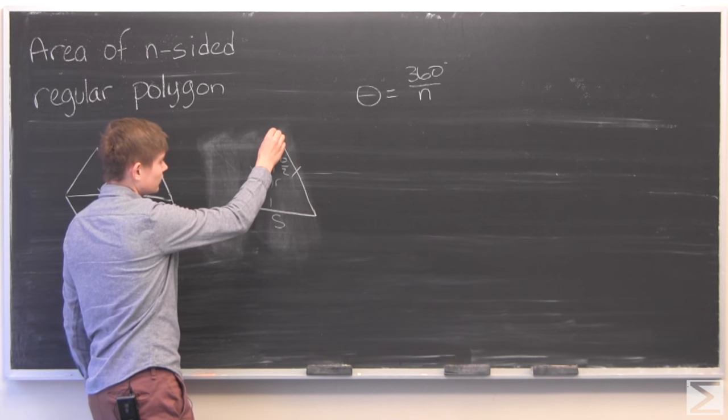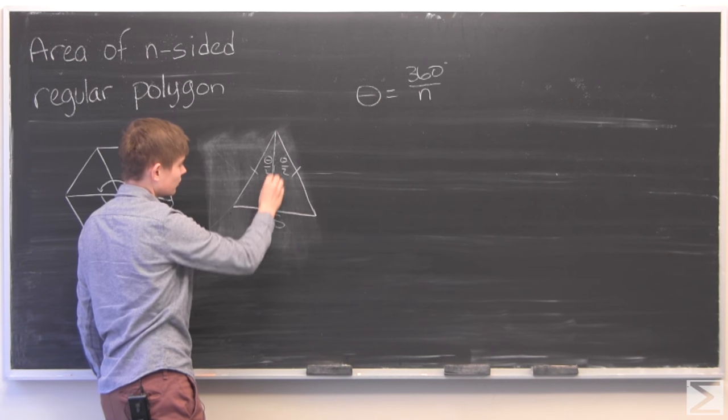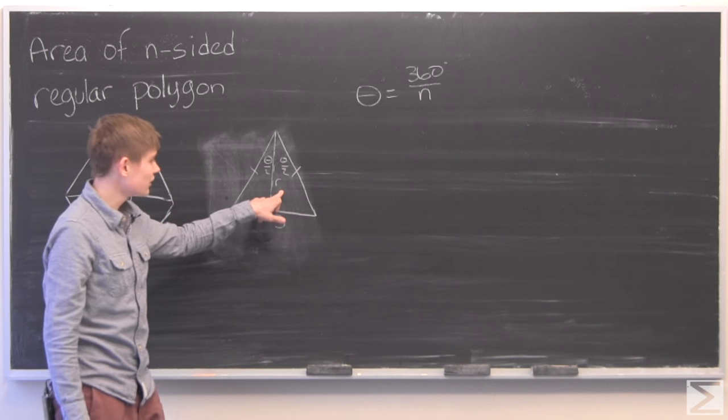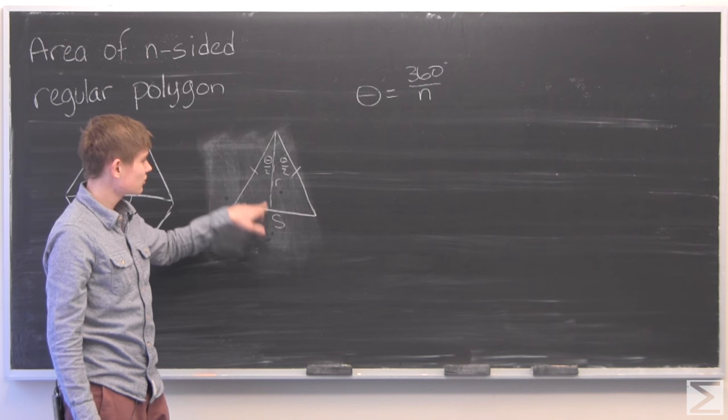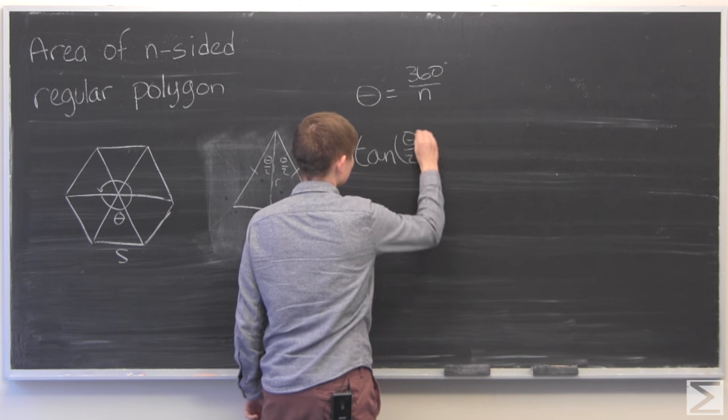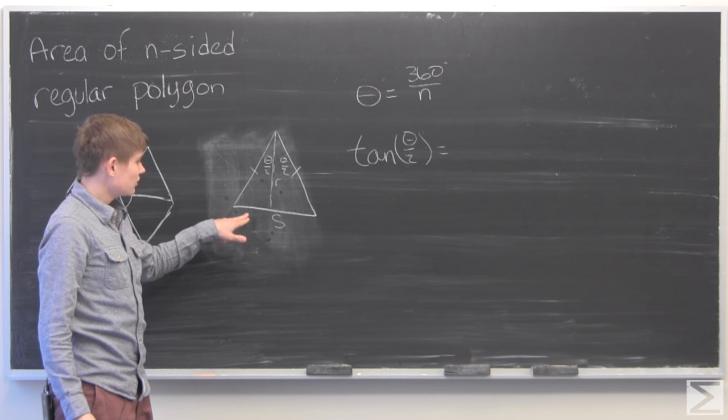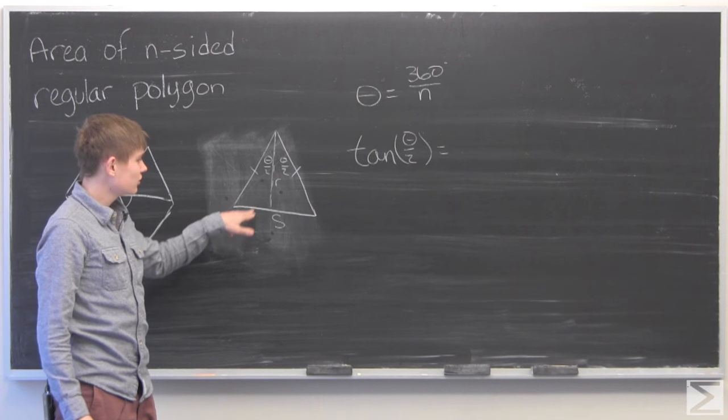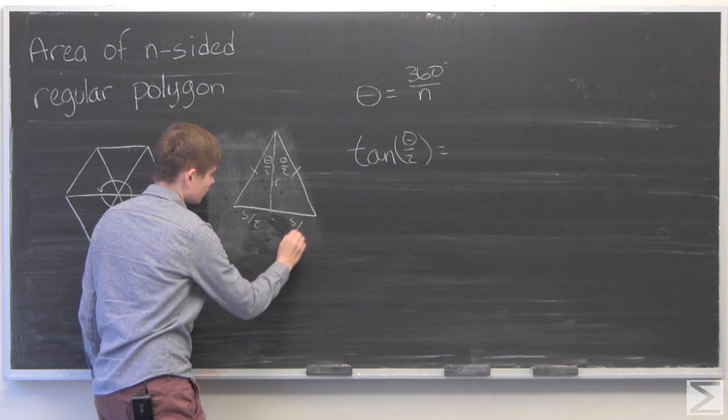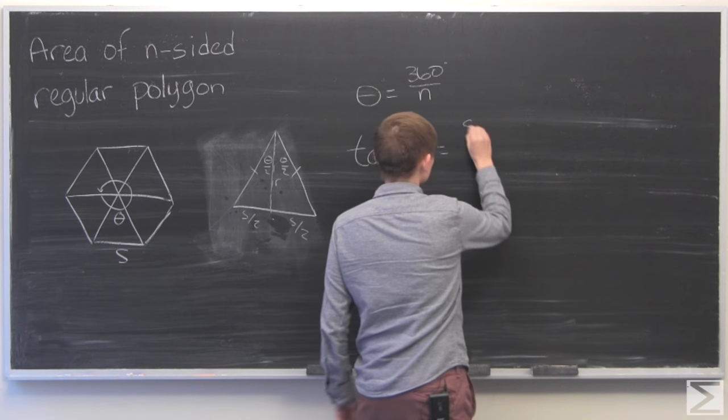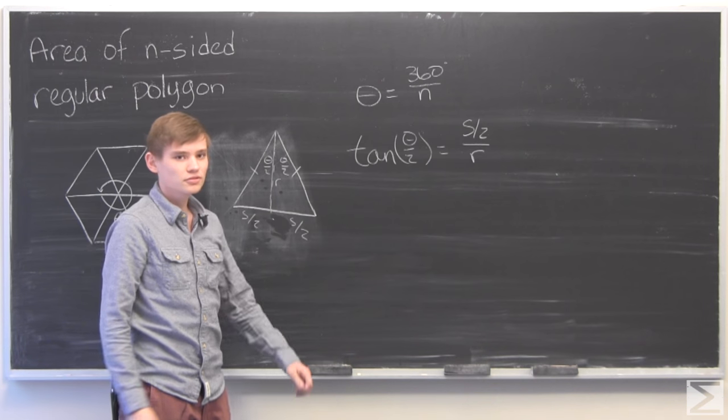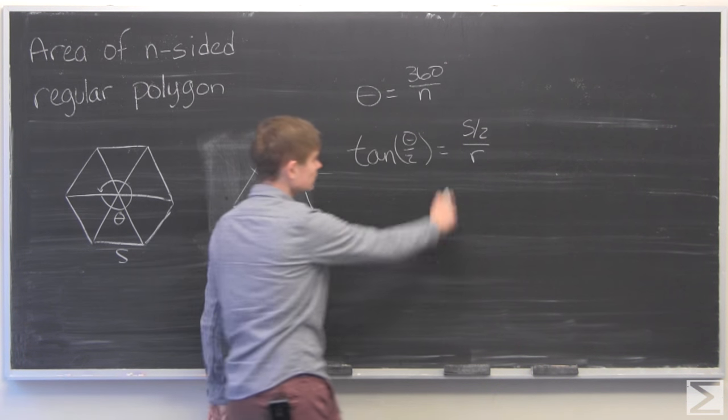Then what we can do is find the area or find this length and then multiply it by S and divide by half and we'll find the area of this triangle. But we have to find R. And what we know is S and theta over 2. So if we take the tangent of that angle theta over 2, we have that it is the opposite side over the adjacent side. And since this whole thing is S, we have that this is S over 2 on each side. So we have that the tangent of the angle is equal to half of S over R.